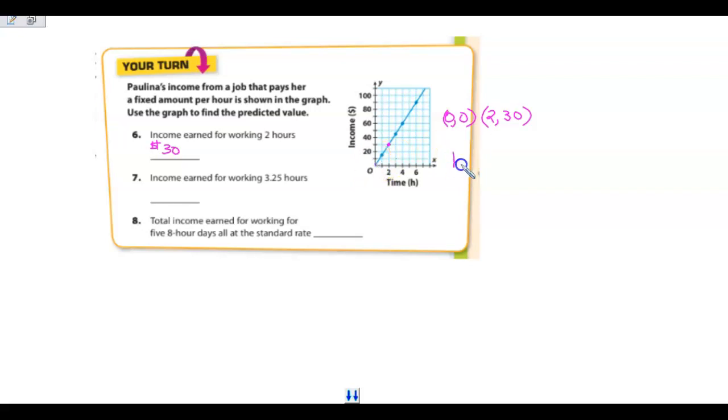Because it's crossing at 0, 0, I know that my y-intercept is 0. So my slope is going to be 30 minus 0 over 2 minus 0 is 30 over 2, which we know is 15. So my slope is 15. So my y equals 15x is my equation.